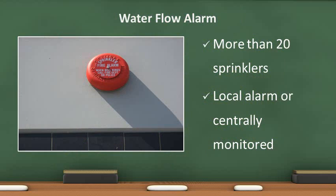This is a sprinkler alarm bell. It sounds when water is flowing through the sprinkler system. The bell is required to be labeled with instructions to call the fire department or police when the bell rings. Sprinkler alarm bells are only required when the system has 20 or more sprinkler heads and may be locally or centrally monitored.